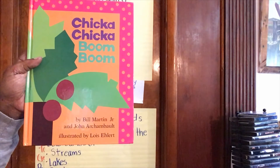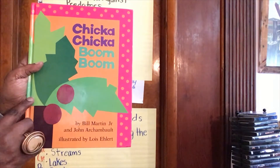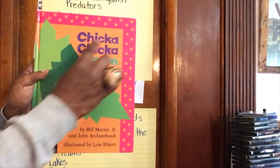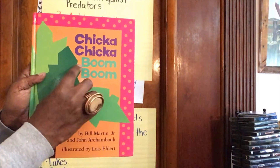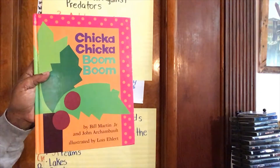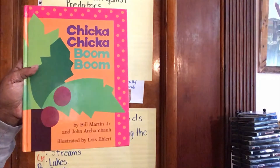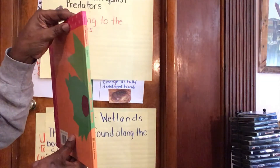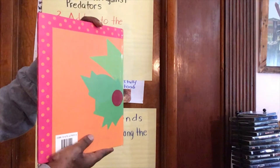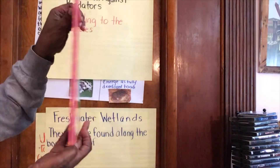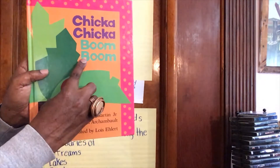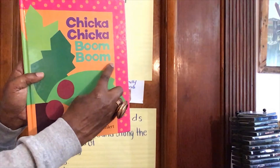On the front cover we find the title. Let's see how many words are in the title: one, two, three, four — four words are in the title. This is the spine that holds the book together. This is the back cover of the book. When you read, you start here and you go this way.